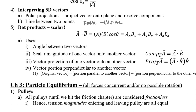Next we covered the dot product, which always gives us a scalar. It's one of the two ways to multiply vectors, and it tells us how much of one vector is parallel to another. Cross products tell us how much one vector is perpendicular to the other. We have two algebraic ways to compute dot products: the magnitude of A times the magnitude of B times the cosine of the angle between them, or the sum product of matching components — Ax·Bx + Ay·By + Az·Bz.